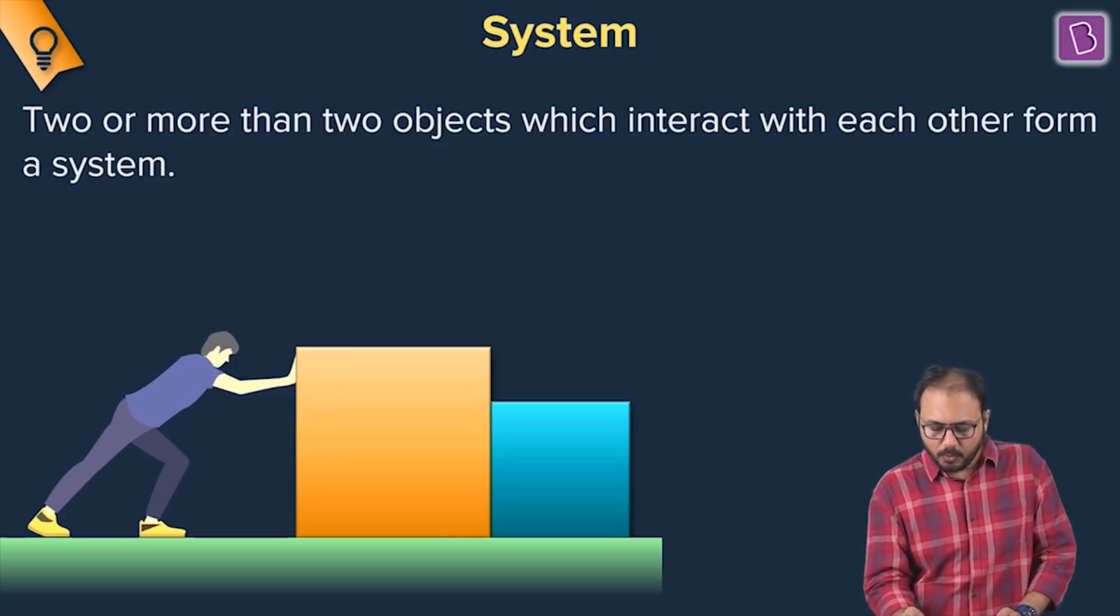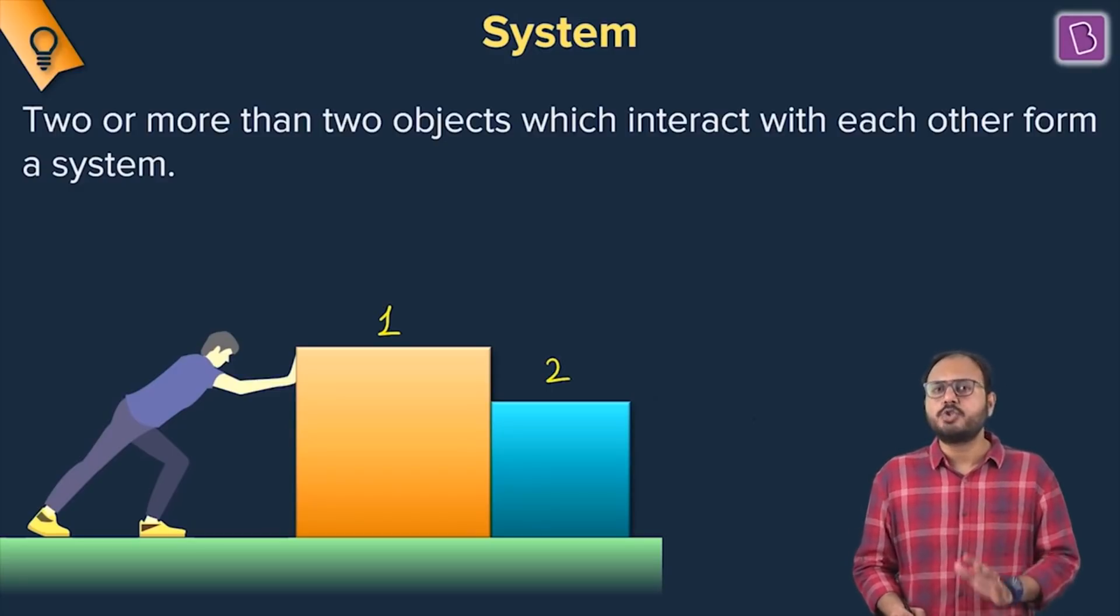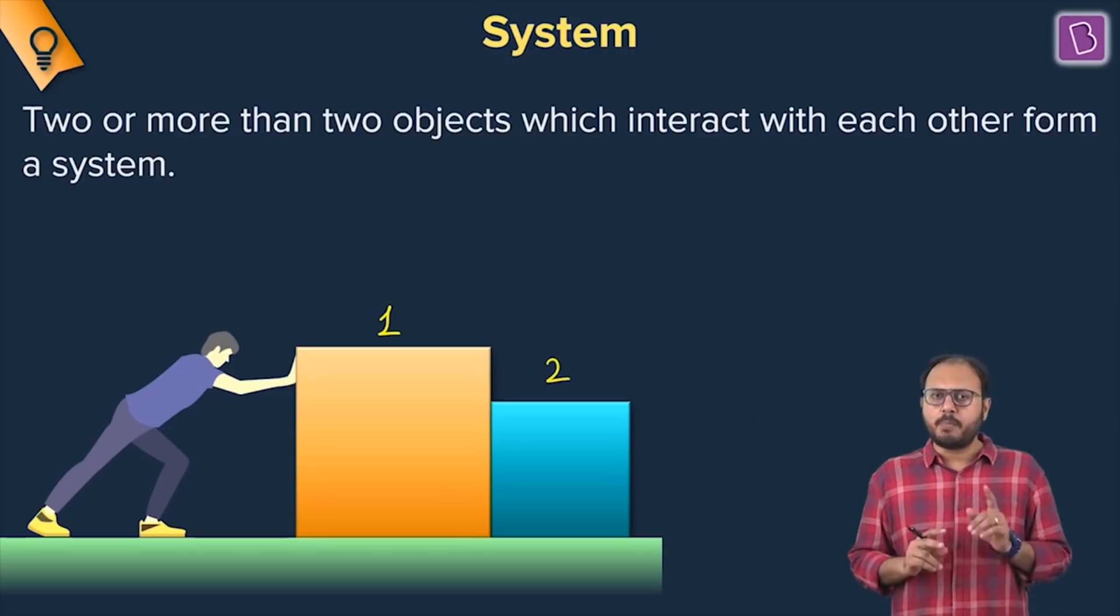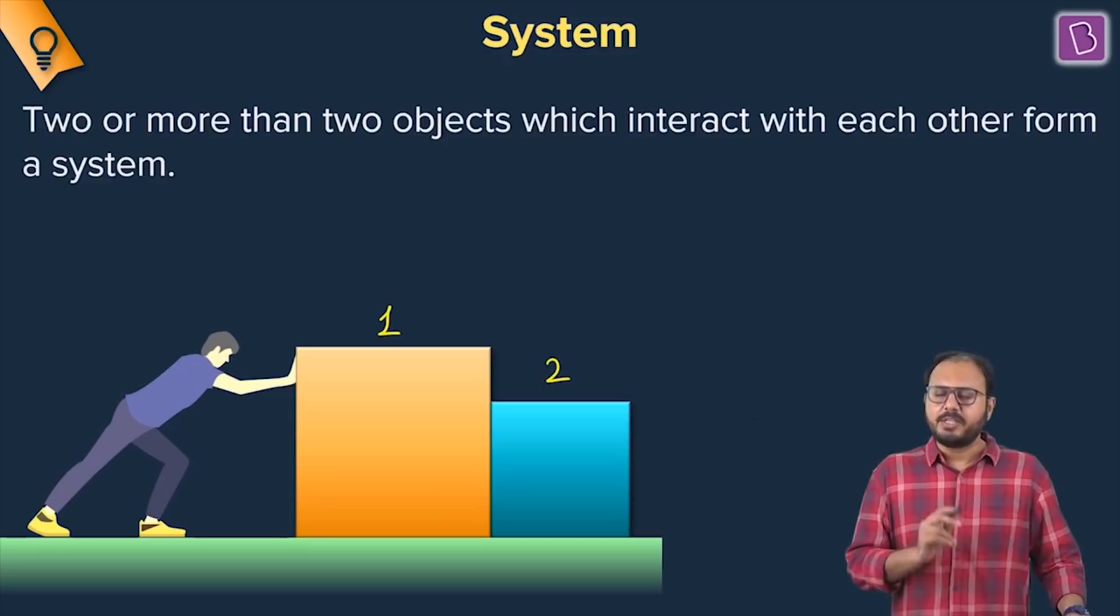For example, can you see there is block one and there is block two. Either one plus two is my system, only one is my system, only two is my system. I have a choice. And based on that choice which you make, choice of system, I have something to teach you.